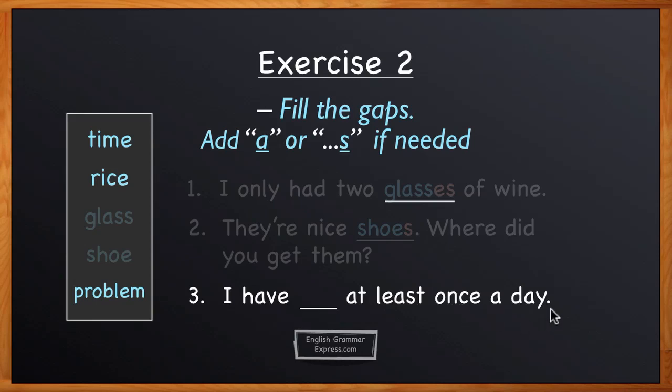From the list, the correct word is rice. Rice is uncountable, so we cannot add an a or an, or a plural s. So the full sentence should be: I have rice at least once a day.